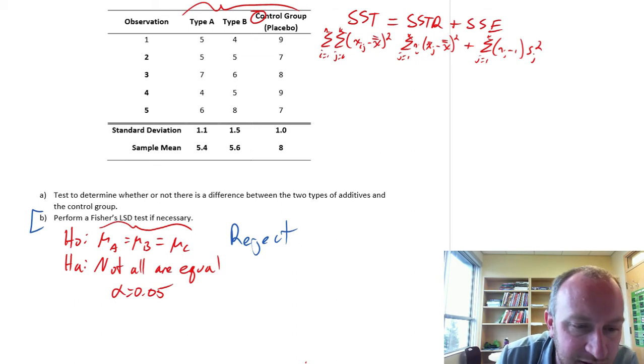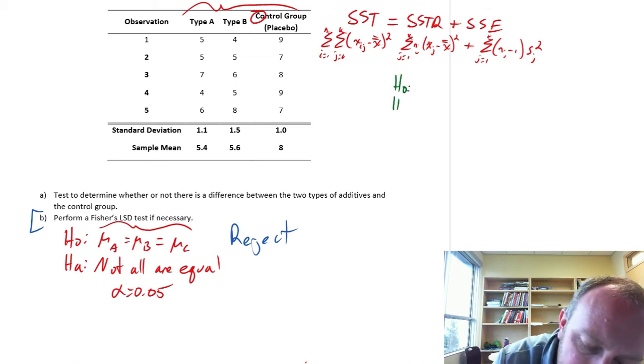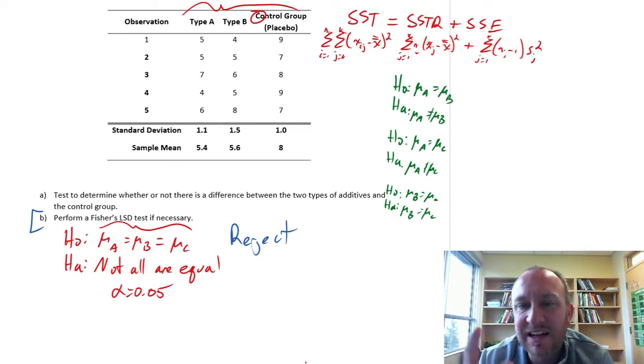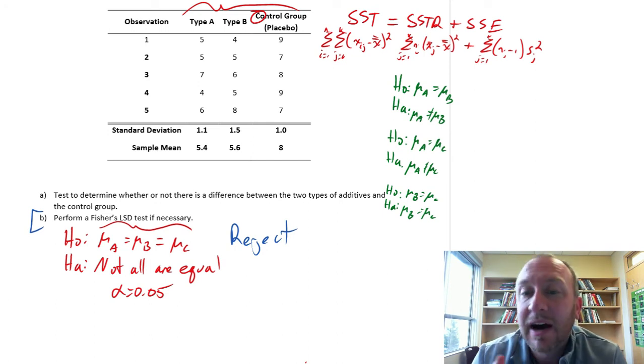I'll write out our hypotheses here. First let's test to see if mu A is equal to mu B or not. Then we'll test to see is mu A equal to mu C or not. And finally we can test to see is mu B equal to mu C. You can see with only three treatments we end up with just three pairwise comparisons. If I had four treatments and five treatments or six treatments you can see how the number of pairs that we can compare will increase quite rapidly.